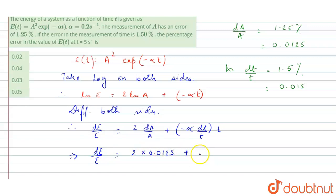dE/E, which we need to find out: 2 × 0.0125 + α is 0.2, plus 0.2...